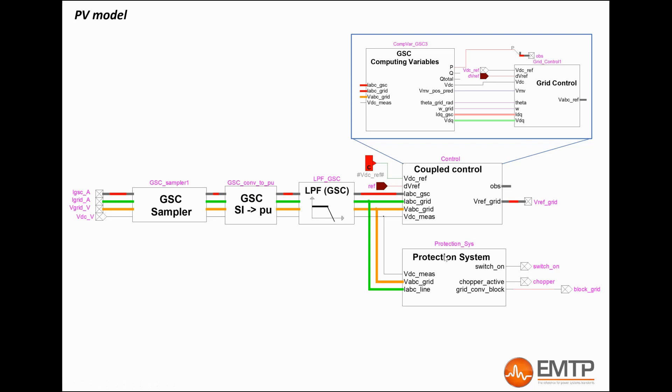The EMTP 4.1 generic model is controlled using vector control techniques in the DQ0 domain. This control type is very commonly used by PV converter manufacturers. Some of its big advantages is that it allows decoupled control of real and reactive powers. The real power is only controlled by the D-axis and the reactive power is only controlled by the Q-axis.